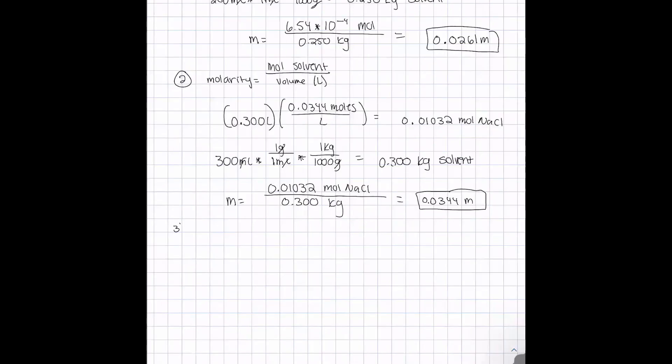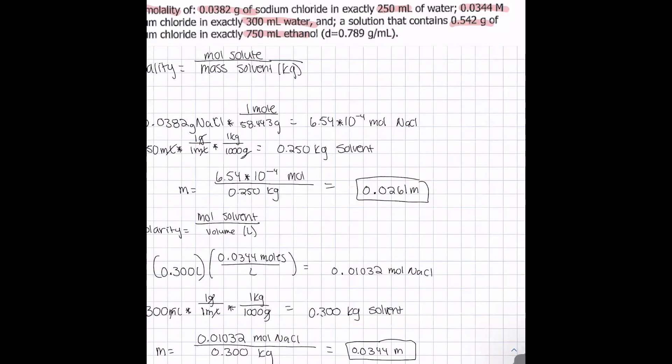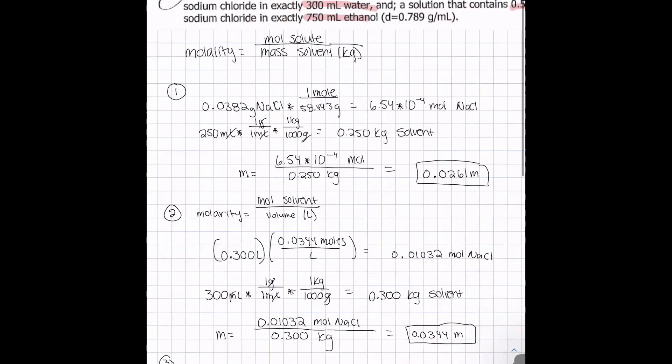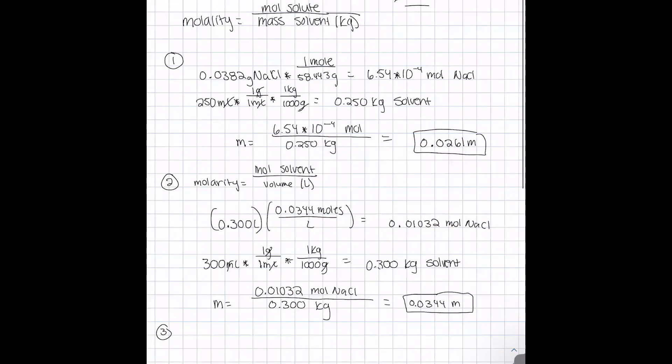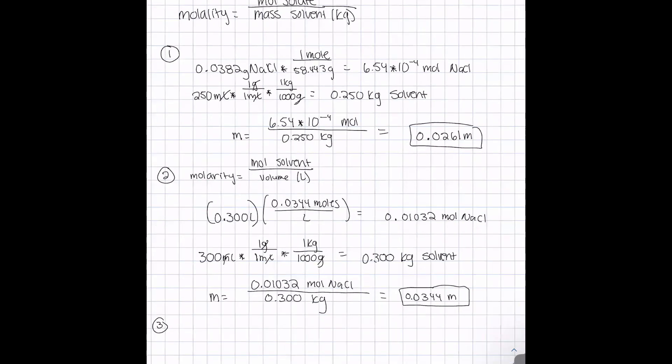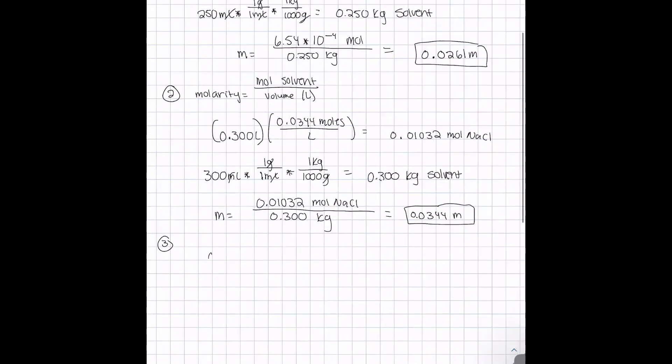For the last part, we have 0.542 grams of NaCl and 750 milliliters of ethanol. We have to be careful to pay attention to the density of ethanol because it's not the same density as water. For the first part, we have to find the moles of our solute.